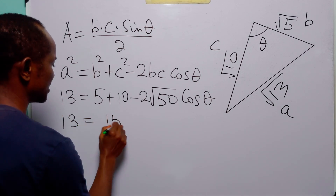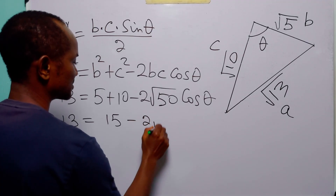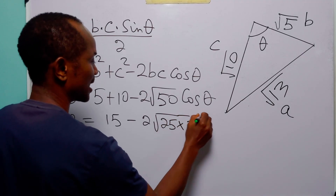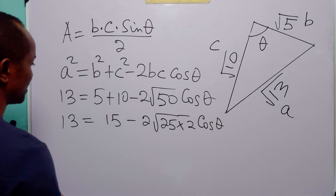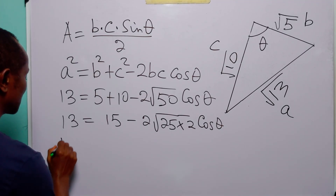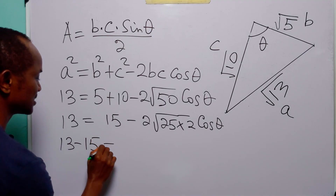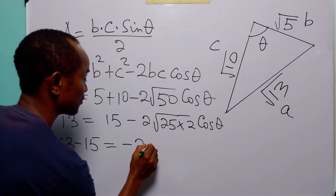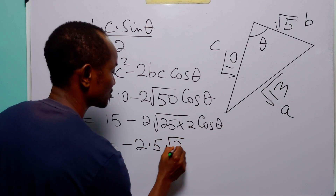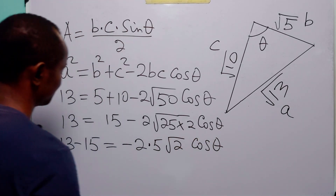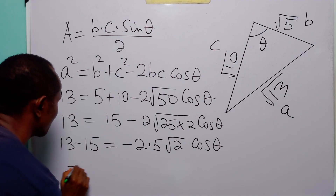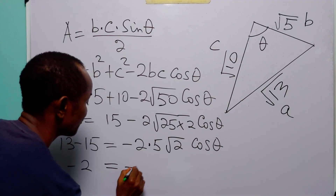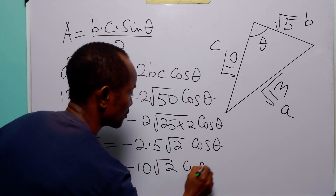From here we have 13 = 5 + 10 − 2√50·cos θ, which gives 13 = 15 − 2√50·cos θ. Moving terms over: 13 − 15 = −2√50·cos θ, so −2 = −2√50·cos θ. Now √50 = √(25×2) = 5√2, so we have −2 = −10√2·cos θ.